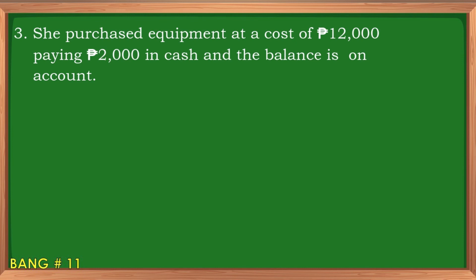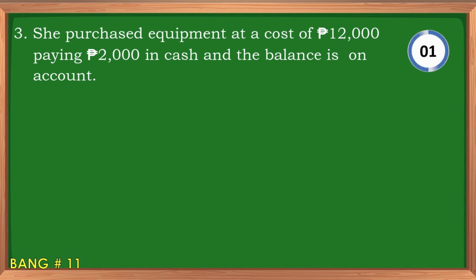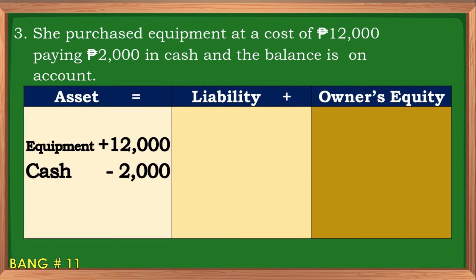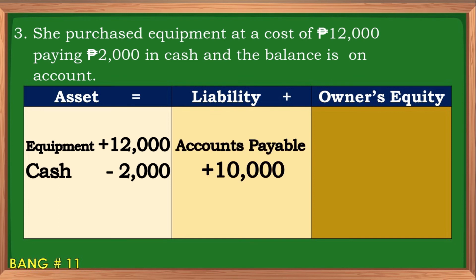Number three: She purchased equipment at a cost of 12,000 pesos, paying 2,000 pesos in cash, and the balance is on account. The answer is: increase in equipment, 12,000 pesos; decrease in cash, 2,000 pesos; and increase in accounts payable, 10,000 pesos.